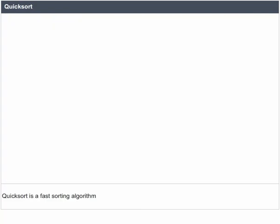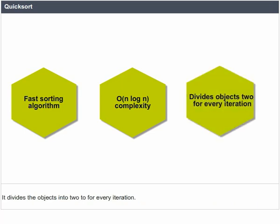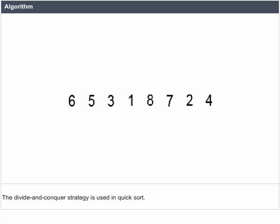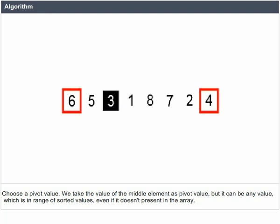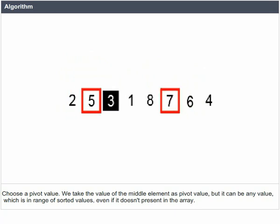Quick Sort is a fast sorting algorithm. On average, it has O(n log n) complexity, making Quick Sort suitable for sorting big data volumes. It divides the objects into two parts for every iteration. The divide and conquer strategy is used in Quick Sort.